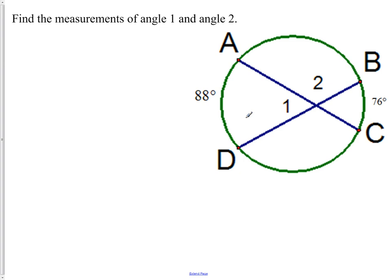Here's our picture. We have find the measurements of angles one and two. The first thing we have to figure out, is it outside or is it inside? This one's inside. Since it's inside, angle one will equal 88 plus 76 divided by two. Remember, when it's inside the circle, you add them together and divide by two. So you'll get 164 divided by two, which is 82. So angle one is 82 degrees.